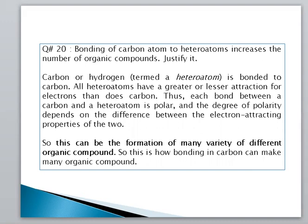Each bond between carbon and the hetero atoms is polar, and the degree of polarity depends on the difference between the electron-attracting properties of the two. When we consider electronegativity, polarity develops between both atoms. This is how the bonding of carbon can make many organic compounds and many varieties of different organic compounds.